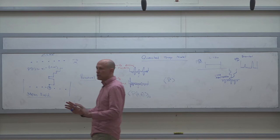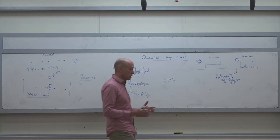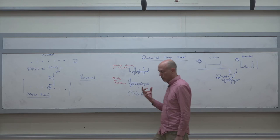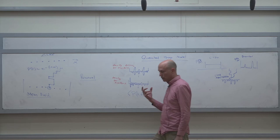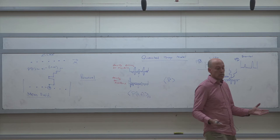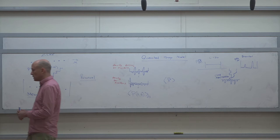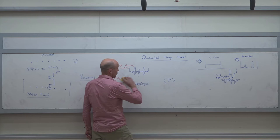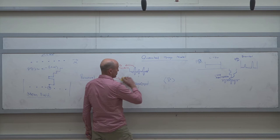The difference between quenched and annealed is clear and fundamental everywhere in condensed matter — they are not the same thing. You might ask: in the laboratory, you have only one system with one disorder realization, so what is the meaning of this average over disorder? This is a subtle question. Sometimes it makes sense and sometimes it doesn't — you need to think about it.